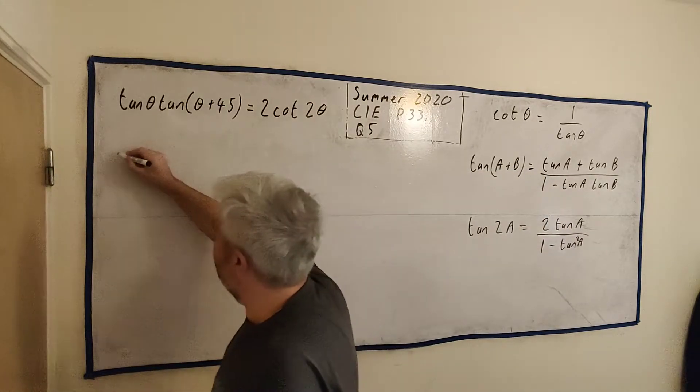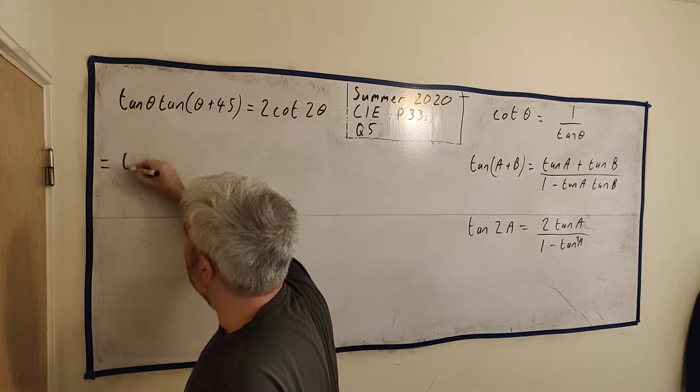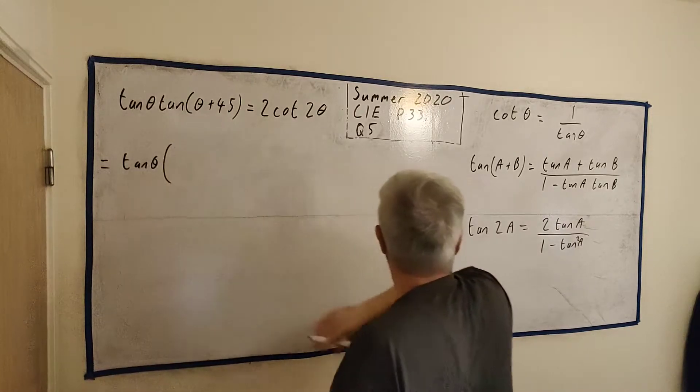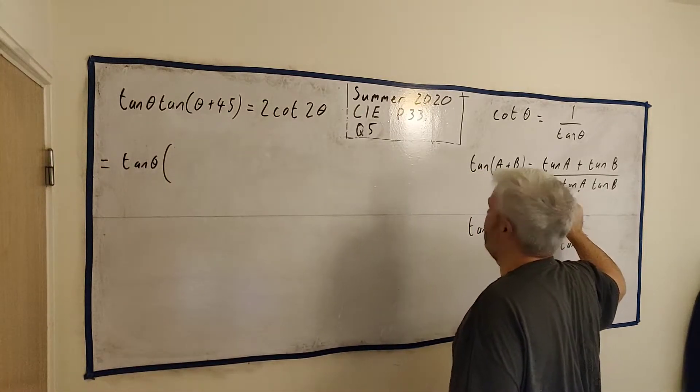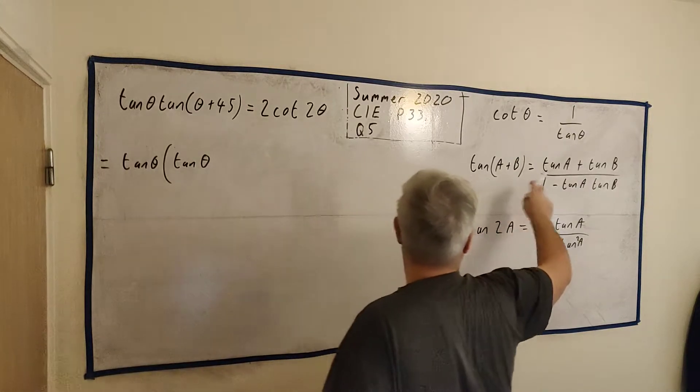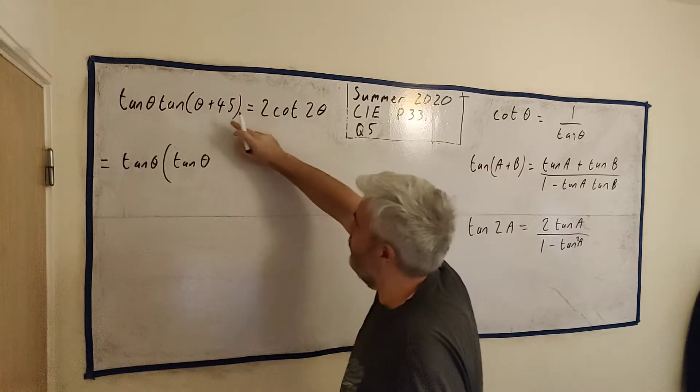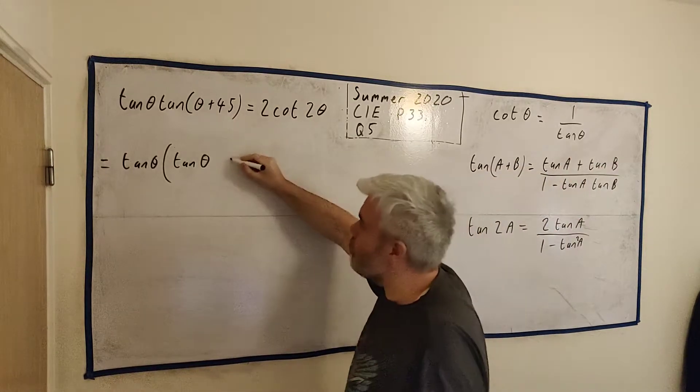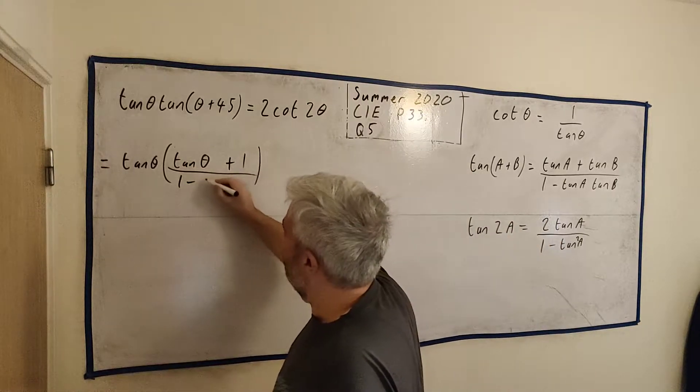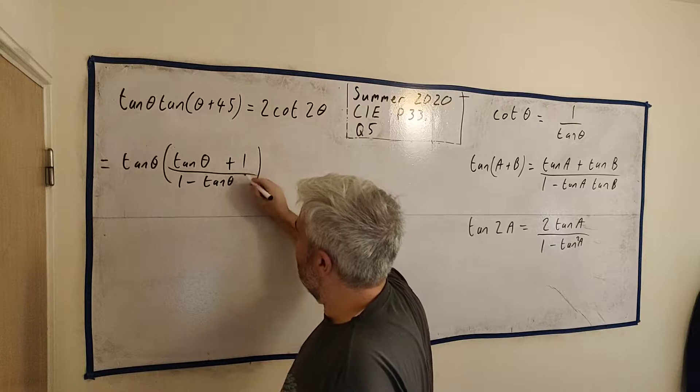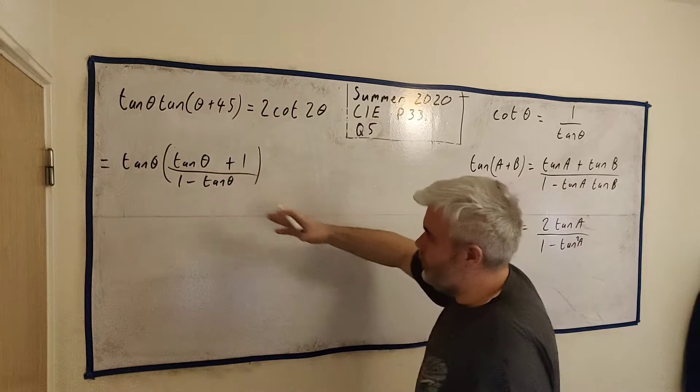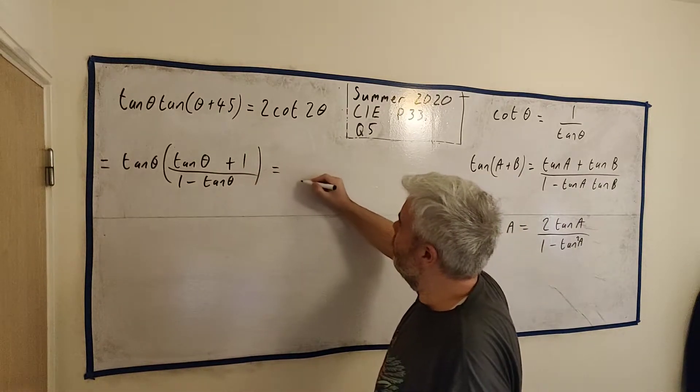We'll just start rewriting this tan θ that one's fine now this one instead of this I'm going to use this formula here so I get tangent of the first one which is θ plus tangent of the second one tan of 45 is just 1 and that's just 1 and that's all divided by 1 minus tangent θ multiplied by 1 which is just tangent θ and this is equal to